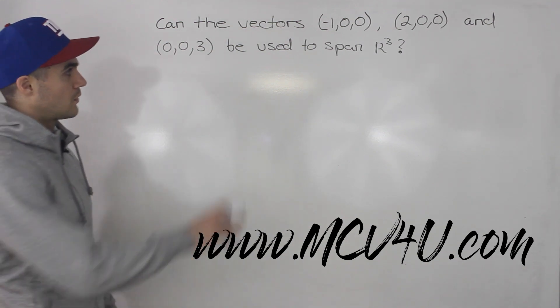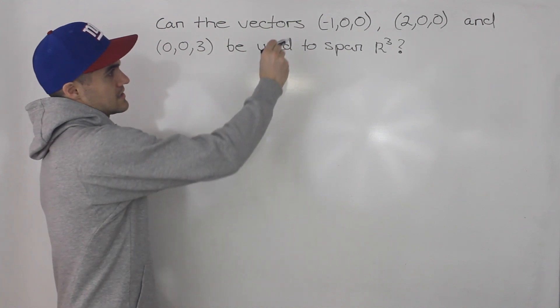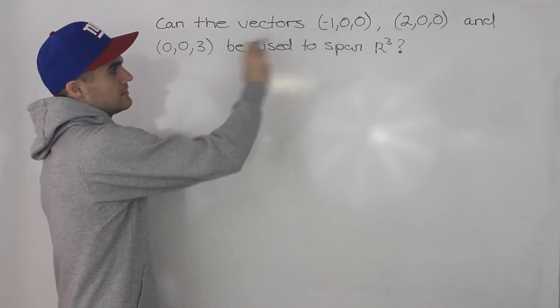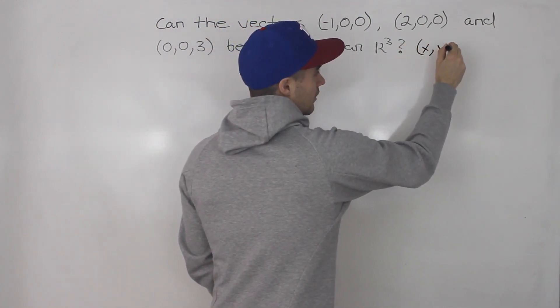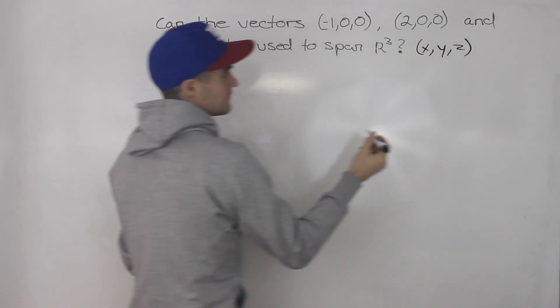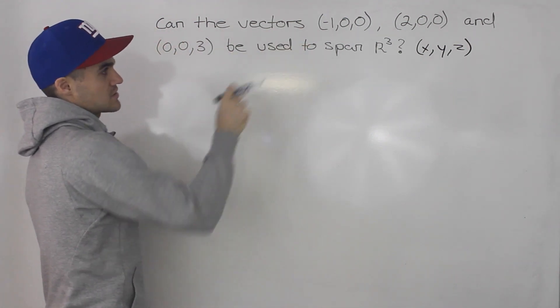Now when we're talking about spanning R³, what we're saying is can we combine these vectors somehow to give us any vector in R³? Let's call it (x,y,z). So can we make a linear combination of these three vectors to give us (x,y,z)?